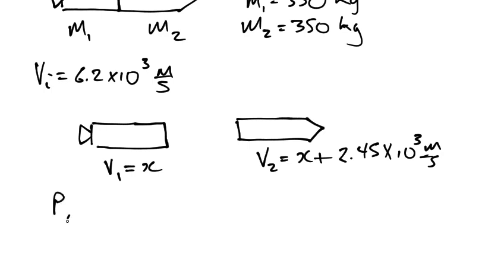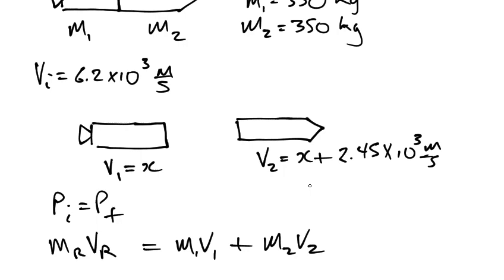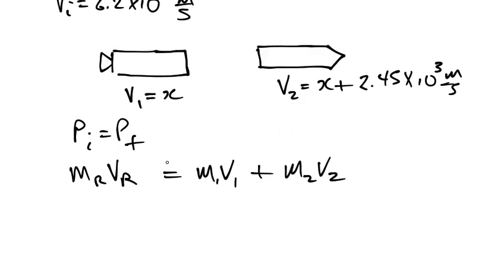So how are we going to do this? Well, let's use conservation of momentum. Initial momentum equals final momentum. What is the initial momentum? Well, originally the mass of the rocket times the velocity of the rocket is equal to, and finally, we have two different distinct pieces, M1V1 plus M2V2. That's the conservation of momentum equation. Now, it's just a matter of plugging things in.